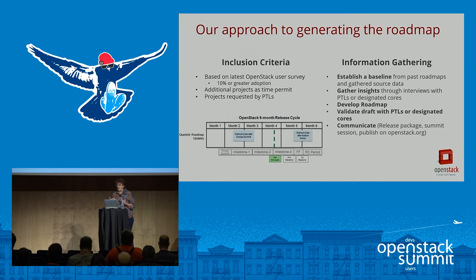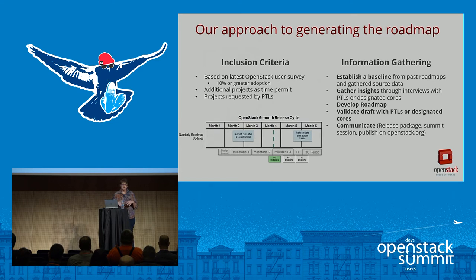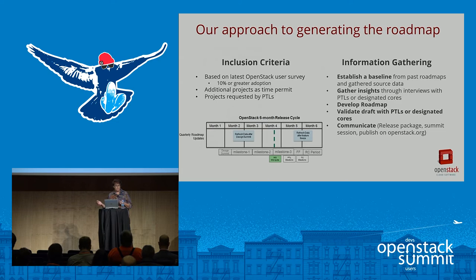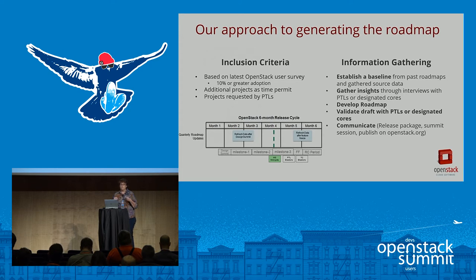I want to start by talking about how we actually create the roadmap, starting with which projects we include. We look at the information gathered in the user survey to tell us which projects are most commonly used by operators and what projects they are looking to deploy in their OpenStack installation in upcoming releases. The other is to look at projects that are critical, though not necessarily the most well-known to a deployment, something like Oslo or RefStack.